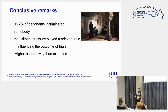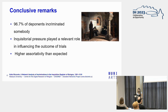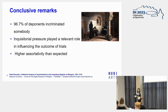Quickly wrapping up: as we've seen, most people incriminated someone else — we have 97% of the opponents who give at least one name. We focused on the pressure exercised by the authority and we've seen how relevant was the role it played on the suspects, both psychological and physical pressure, even though this was used very seldomly and in cases where people were already very involved or failed to appear in court once summoned. And we have a higher assortativity than expected for sex and kinship, as well as for residence and occupation. Thank you — I end here my presentation.